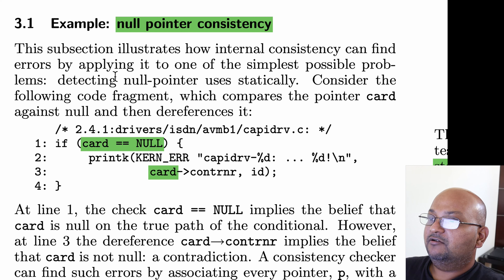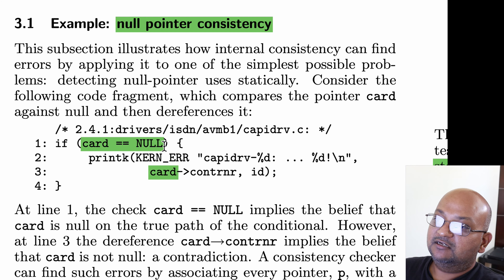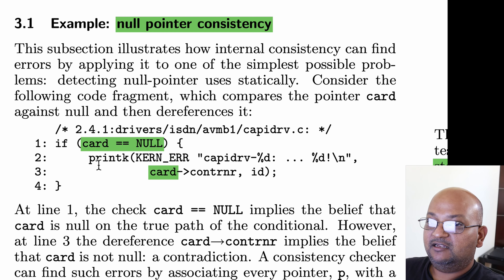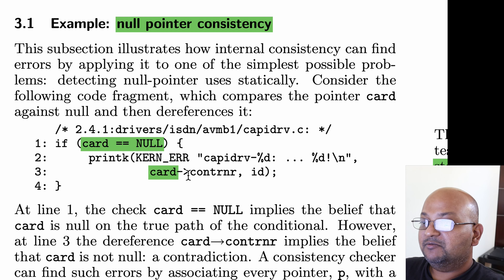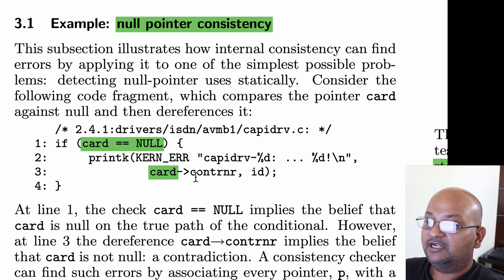Let's look at a simple concrete example of how beliefs are propagated through code and how contradictions indicate the presence of a bug. In this code snippet, on line one you see a comparison with null, which means that if you're inside the if statement, your belief set includes the belief that the pointer card is null. And when you look at line three, where card is dereferenced, that would imply the belief that card is not null — and there you have a contradiction, implying the presence of a bug.